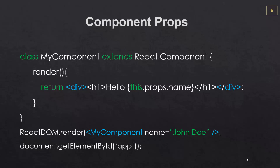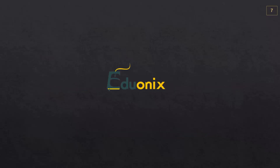We can also have properties passed into our components. So in MyComponent we have 'Hello' and then this.props.name — this is a prop or a property. Down in the render call you can see we're passing in what looks like an attribute called name equal to the value of 'John Doe'. So we're passing this property of name into the component and we can access it with this.props.name. That's the basics of components — now let's jump into React and look at a quick example of creating a component.